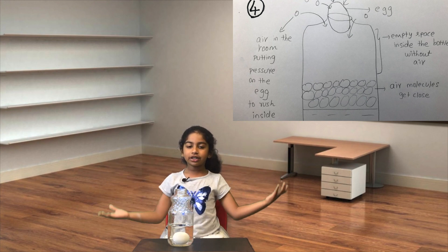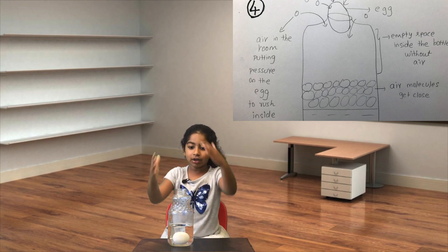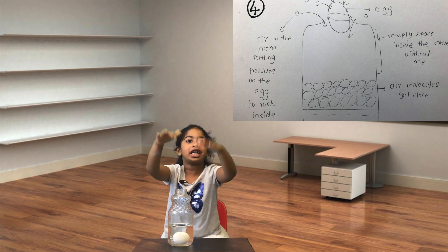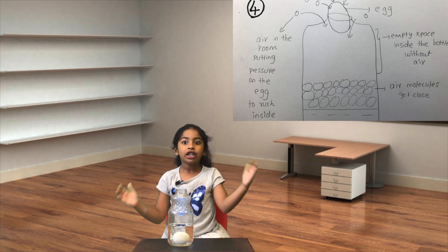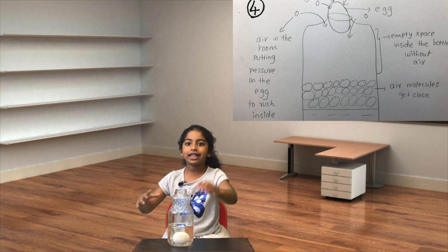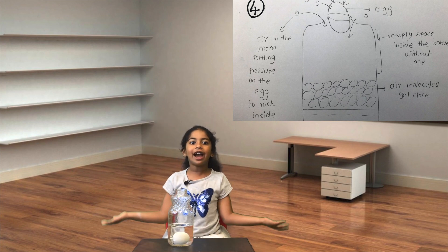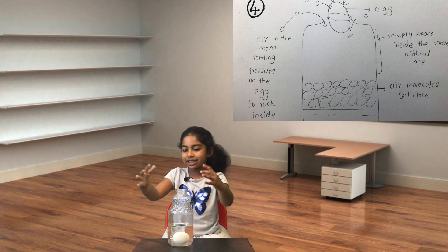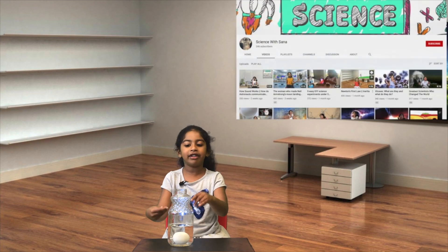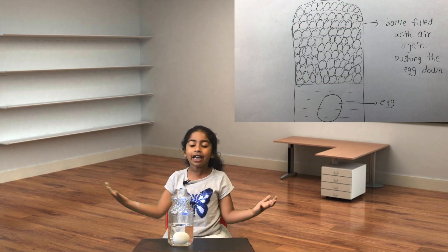The air in the room wants to rush in, so it keeps pushing the egg down so it can take the space that's in the bottle. And finally it pushes the egg down and fills that space up.